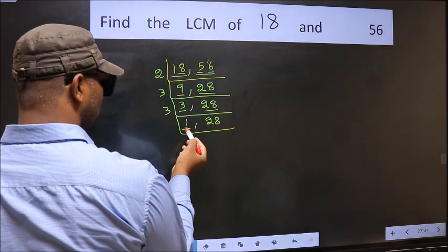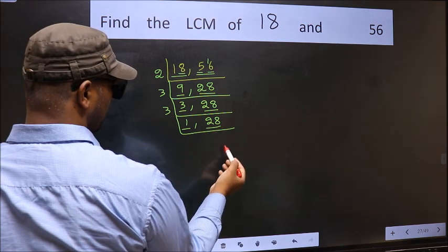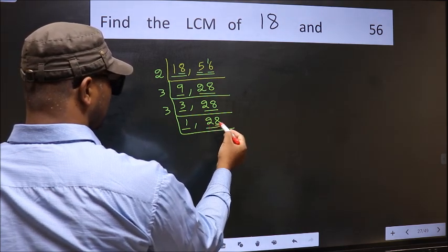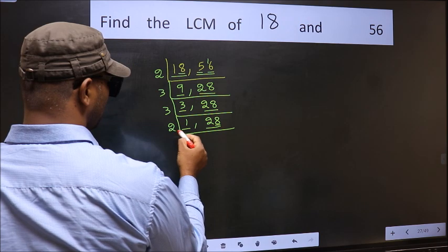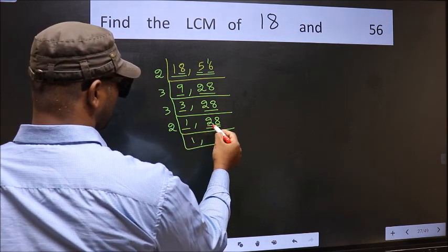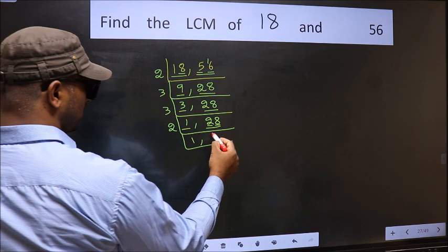We got 1 here, so focus on the other number, 28. Last digit 8, even, so take 2. First number 2—when do we get 2 in the 2 table? 2 ones, 2.